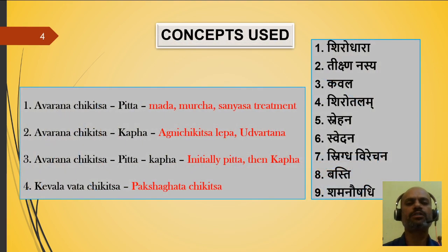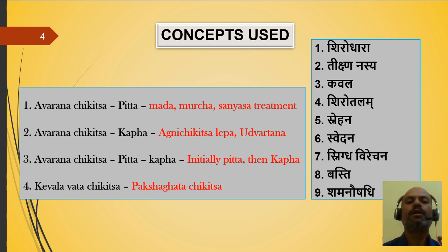The concepts used: we used Avarana Chikitsa, that is Pitta Urta Vata Avasta. We adopt Pitta Urta Vata Chikitsa, along with that Mada Murcha Sanyasa Chikitsa. Kapha Urta Vata Avasta — Kapha Urta Vata Chikitsa in the form of Agni Chikitsa, Lepa or Udvartana, etc. Pitta Kapha Urta Vata Avasta — then Pitta Kapha Urta Chikitsa, that is Pitta first, then Kapha, then Vata. And Keval Vata Chikitsa — Paksha Gatha Chikitsa as we are going to adopt.